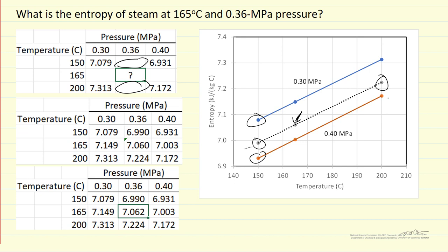So here's a table where I show the values at 0.36 MPa, the values that I use to generate this dashed line. And then the value you're interested in from double interpolation is here.